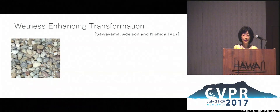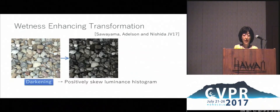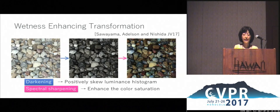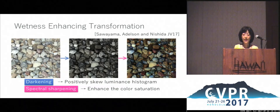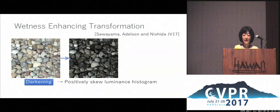They empirically showed that to make a dry surface look wet, it can be darkened by positively skewing the luminance histogram and its colour can be changed to have higher saturation. This image transformation shows that darkening alone is insufficient to model wet surface appearance and spectral sharpening is essential.